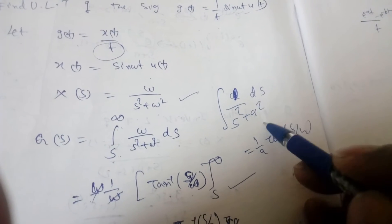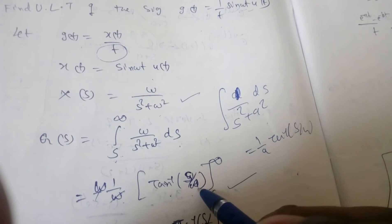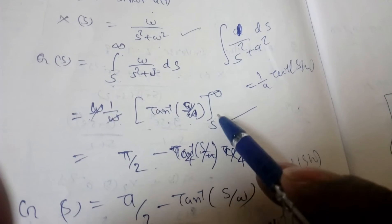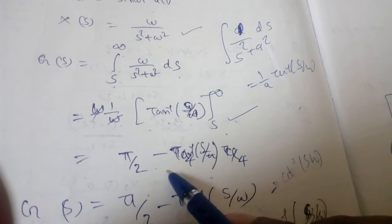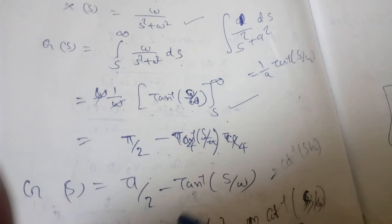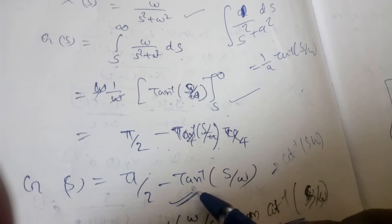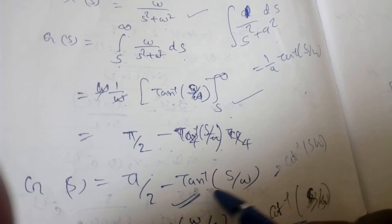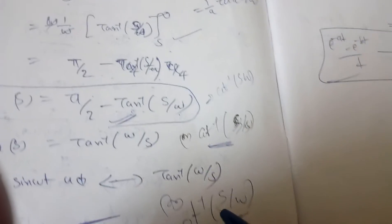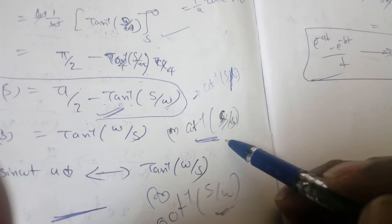We know the formula: the integral of 1 by (s² + a²) ds equals (1/a) tan inverse(s/a). So with ω as a common factor, we get (1/ω) tan inverse(s/ω), evaluated from s to infinity. Substituting the limits gives tan inverse(infinity) = π/2, so the Laplace transform is π/2 minus tan inverse(s/ω). This can also be written as cot inverse(s/ω).